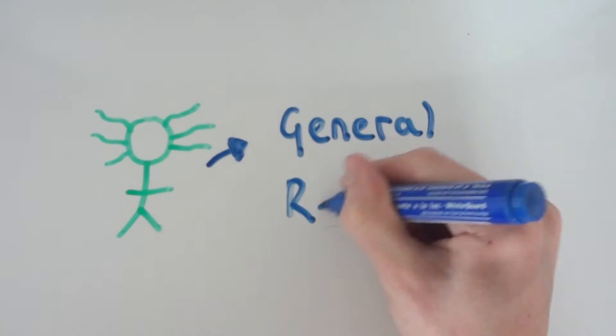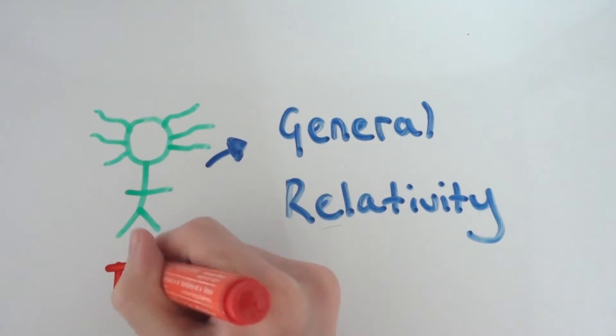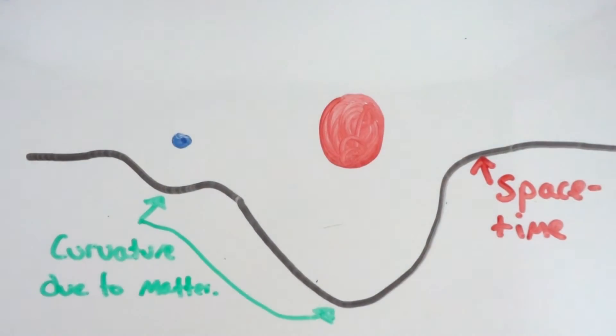Einstein proposed general relativity. Both of the two theories described gravity as being on a gravitational field on space, but Einstein's theory, better identified as general relativity, is the curvature of space-time fabric due to matter telling space-time how to curve. A common quote is that matter tells space-time how to curve, and the curved space-time tells matter how to move.